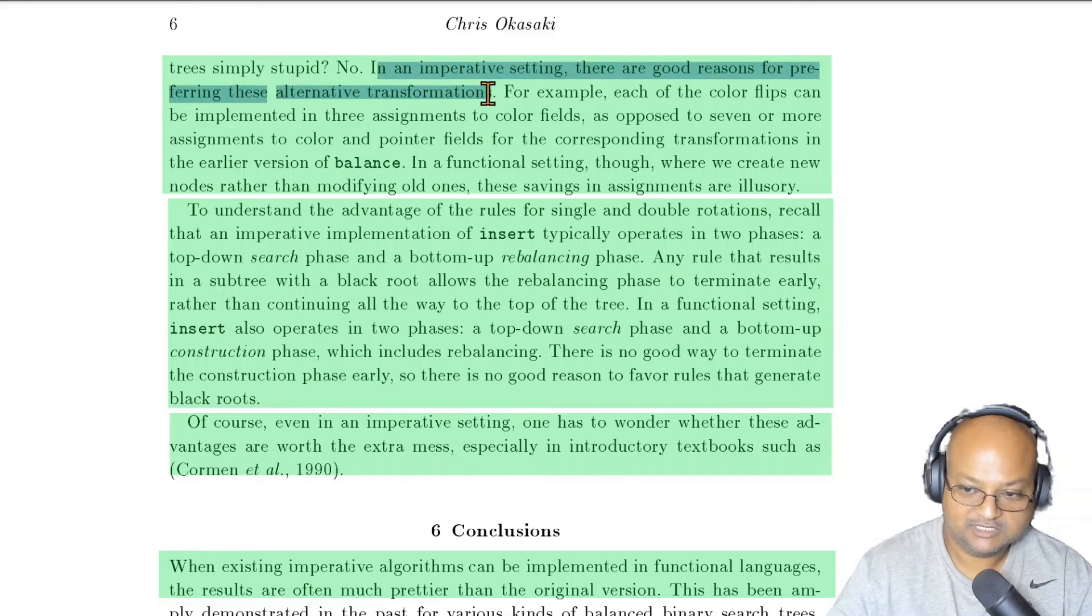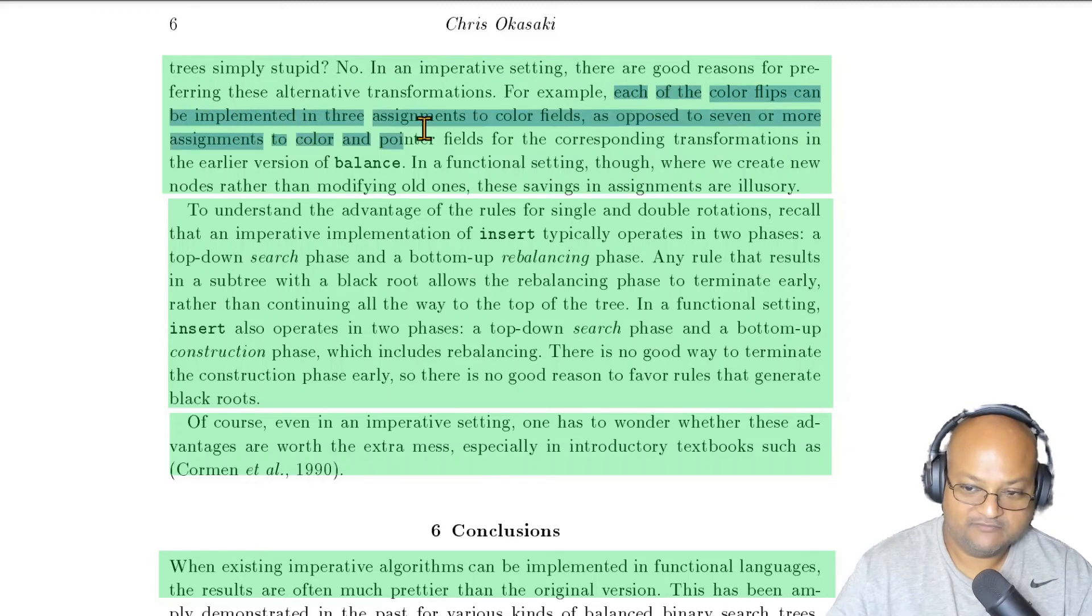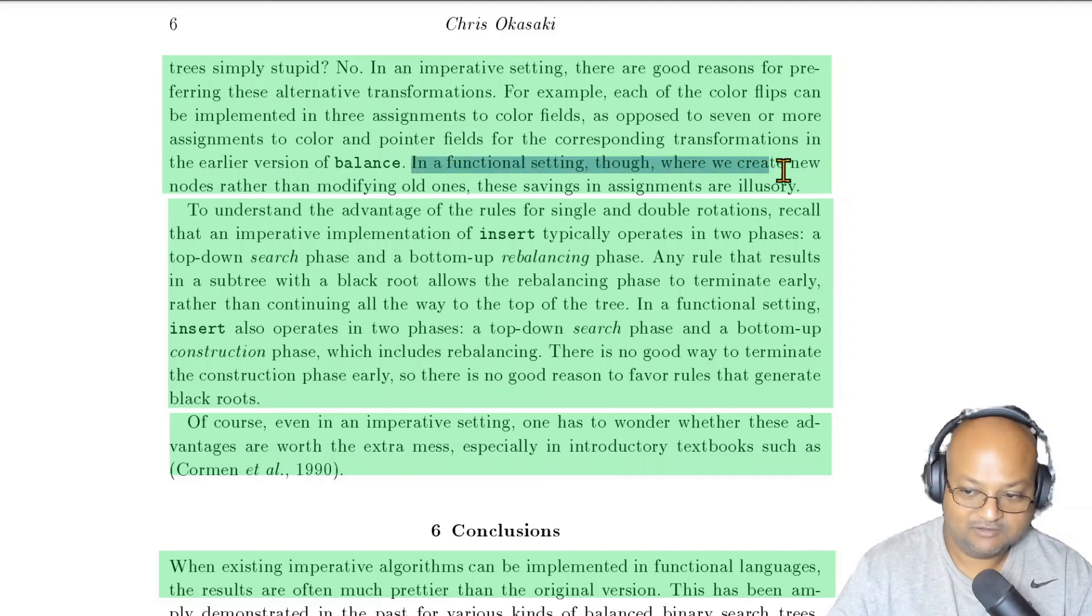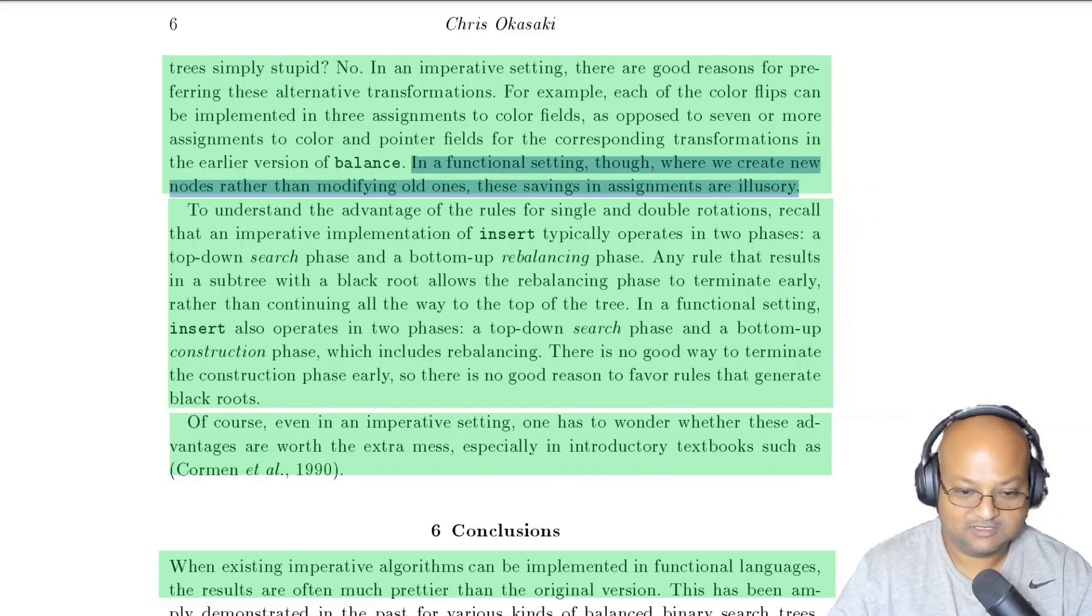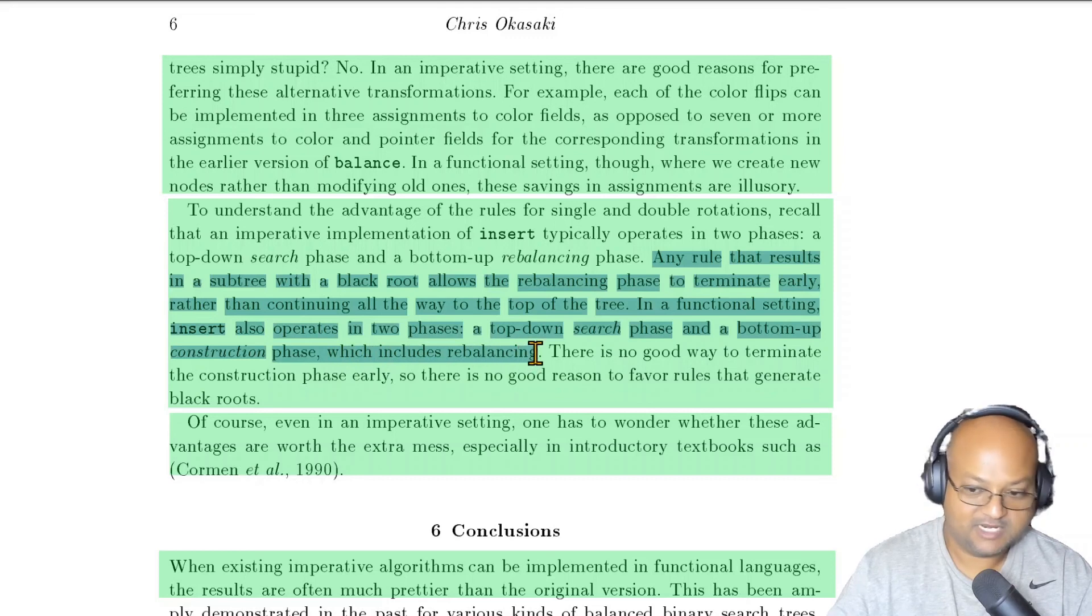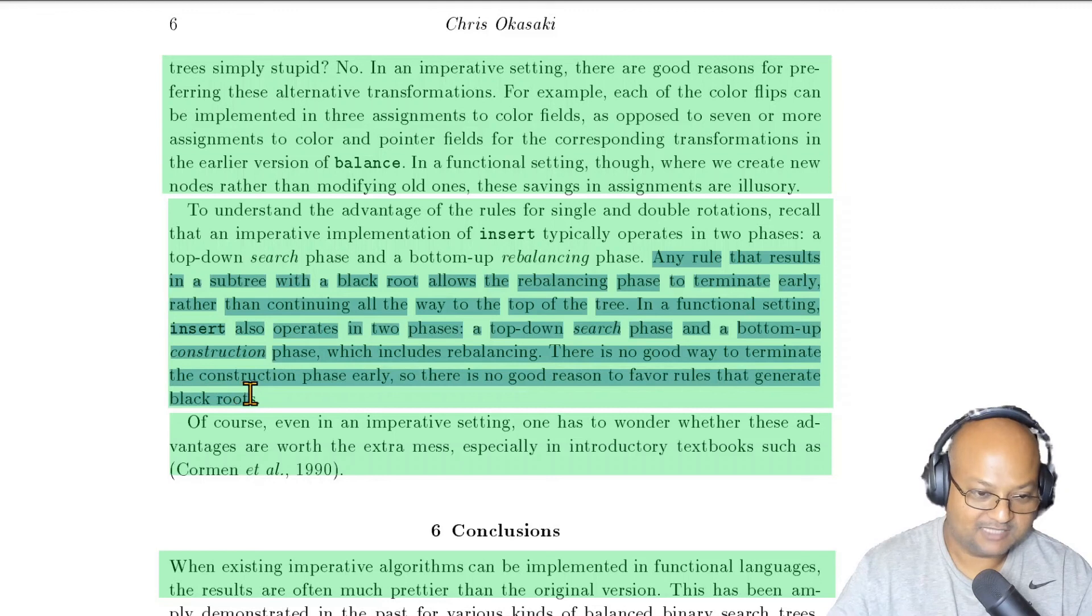in an imperative setting, you are doing all these things to buy a little bit of extra performance. For example, you can save a few assignments by doing color flips. You can do it in three assignments rather than the seven or more in the current functional version of balance. However, note that in a functional setting, you are not really modifying the data structure in place. You are creating new nodes as opposed to imperatively modifying the data structure that already exists. There's also another performance optimization where the bottom-up rebalancing phase can be terminated early, but you're not doing that in this Haskell solution.